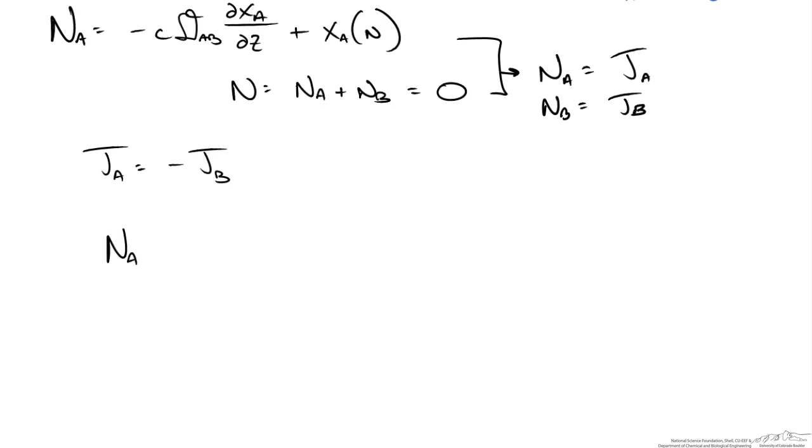If we were to look at the molar flux of A and we have a binary mixture in which the total concentration is constant, the pressure and temperature constant, the mole fractions are constant, so we have a steady state process but different between two points like we have above between point Z1 and Z2.